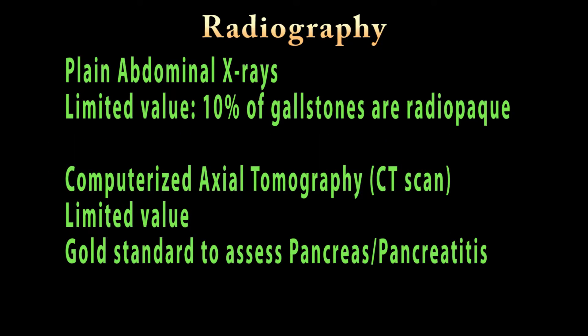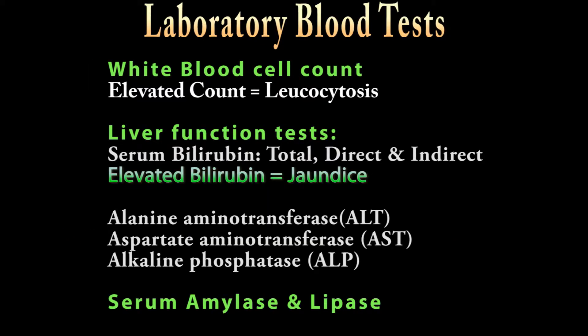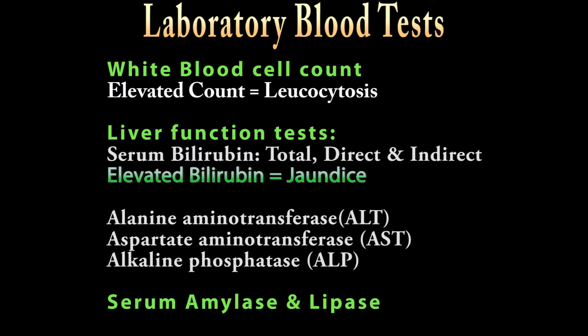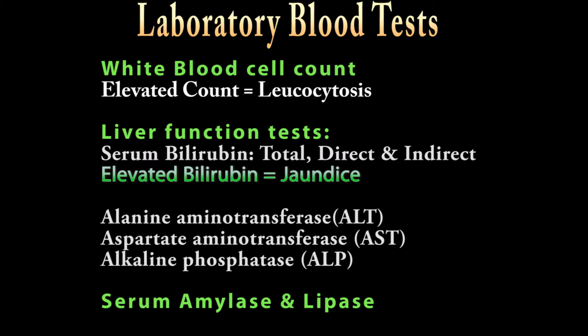Radiography has limited value in assessing gallbladder disease. However, when the patient is suspected to have acute pancreatitis, a CT scan of the abdomen is a very useful tool. Blood testing is also very important, including the white blood cell count and liver function tests such as serum bilirubin, alanine aminotransferase (ALT), aspartate aminotransferase (AST), and alkaline phosphatase, as well as pancreatic function tests including serum amylase and lipase.